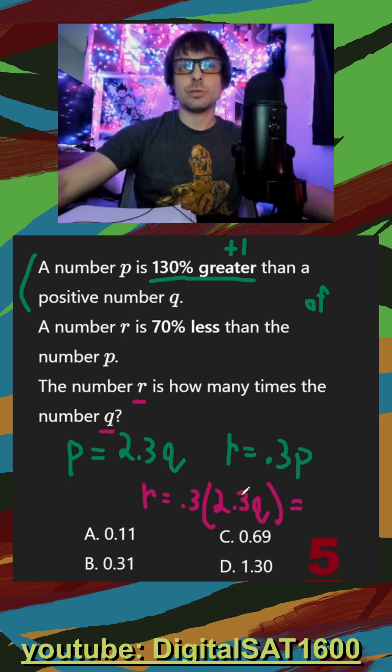And finally, 3 times 2.3 would be 6.9. But since it's 0.3, that just becomes 0.69 Q. And my final answer here is just going to be C, the number in front of Q.